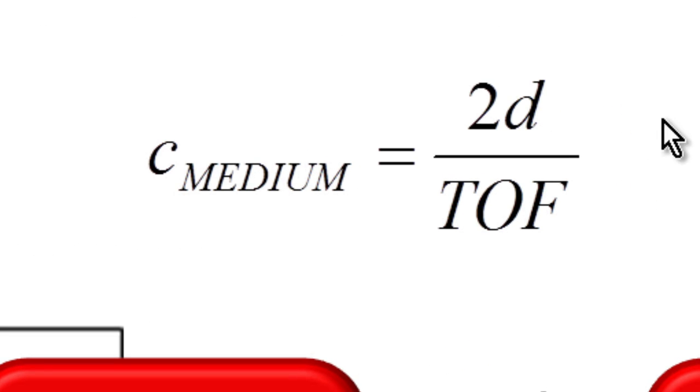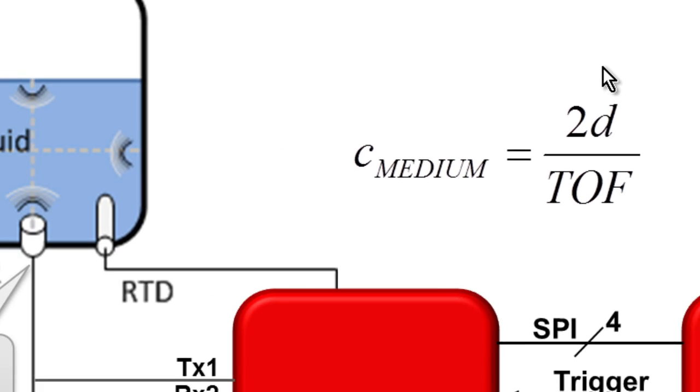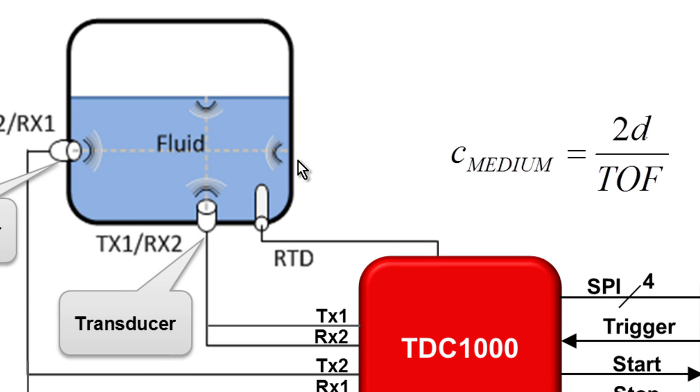By doing that, I now have a fixed distance that my echo is going to transfer over. Looking at this equation here, the TDC1000 will allow you to measure that time-of-flight, and if I know my distance, which in this case is this distance here, I can then calculate the speed of sound for the medium I'm in.